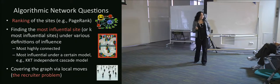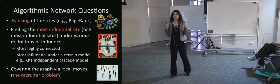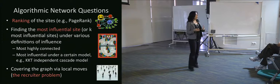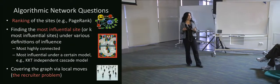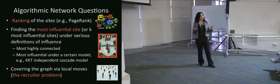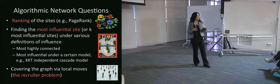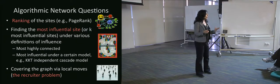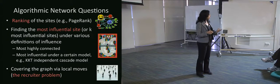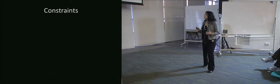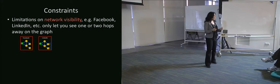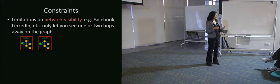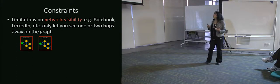How do we do things like cover the graph? For example, on LinkedIn, if you're a recruiter trying to reach people on LinkedIn, how do you set up your network in such a way that you can cover the graph and find the people you're trying to reach?